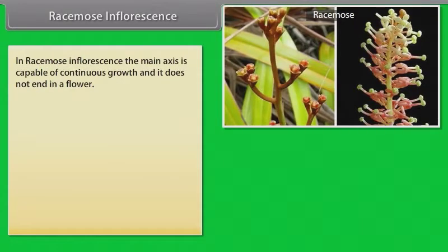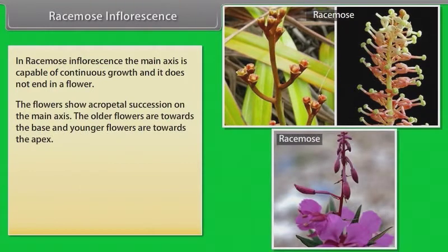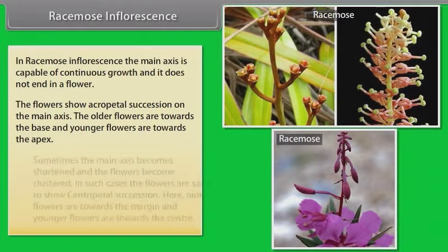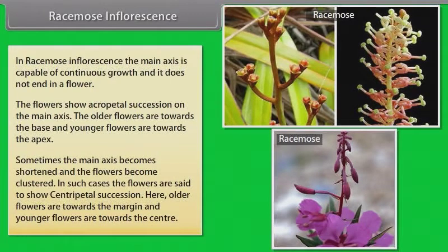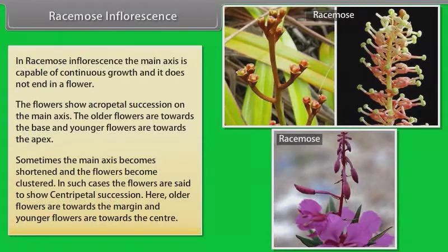In racemose inflorescence, the main axis is capable of continuous growth and it does not end in a flower. The flowers show acropetal succession on the main axis — older flowers are towards the base and younger flowers are towards the apex. Sometimes the main axis becomes shortened and the flowers become clustered; in such cases the flowers show centripetal succession, where older flowers are towards the margin and younger flowers are towards the center.